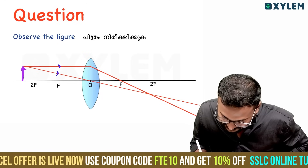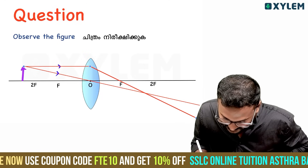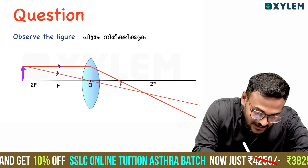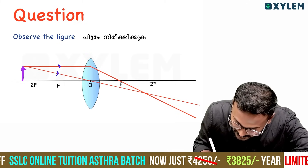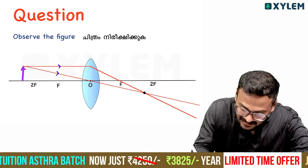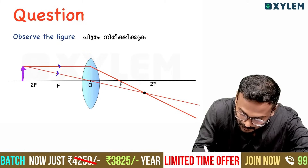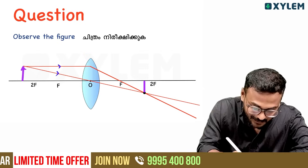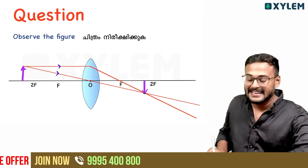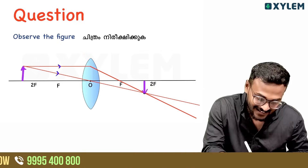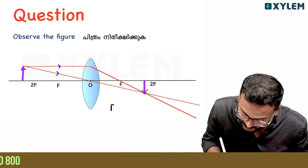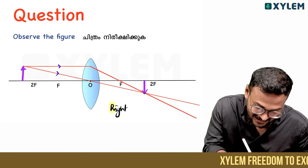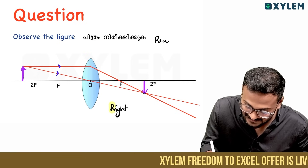We are going to look at our image. We are going to focus mode — 2F and F — and find image formation at that point. The image is on the right side. You can learn the right-side image.